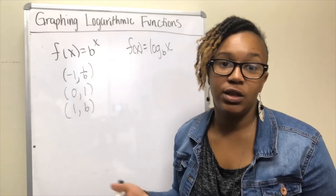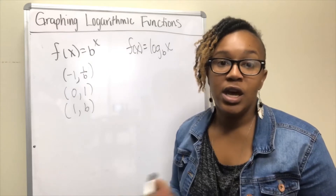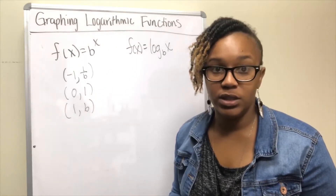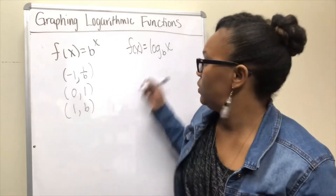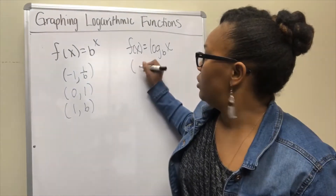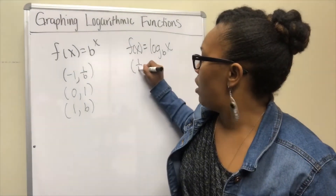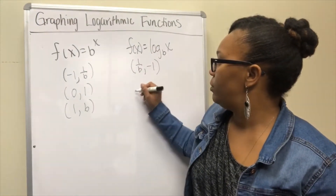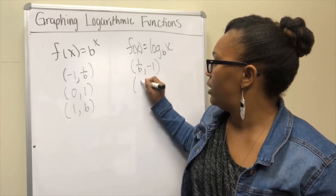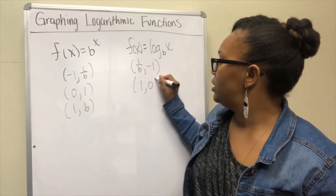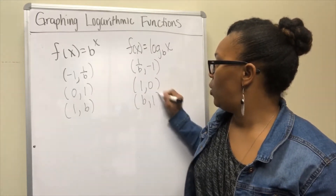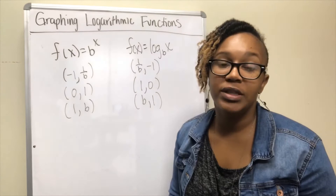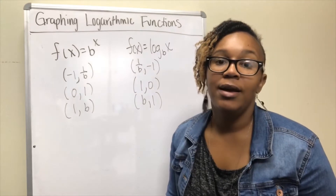Since log base b of x is the inverse of the exponential function, you take those three points and switch them — because inverse functions swap the domain and range. So the three points always on your logarithmic function are: (1/b, -1), (1, 0), and (b, 1).